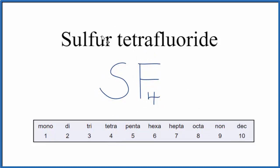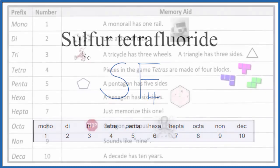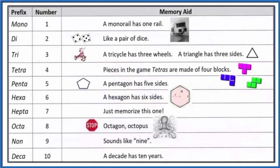Note that for sulfur, even though it's all by itself and we only have one sulfur, we don't write 'mono' in front of the first element in a molecular formula. If you need help memorizing these prefixes, this table should help you. This is Dr. B with the formula for sulfur tetrafluoride, SF4. Thanks for watching.